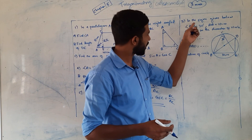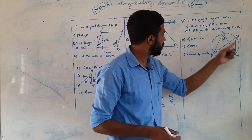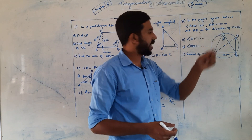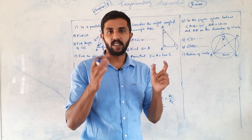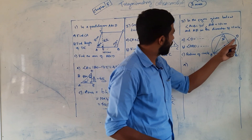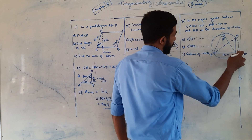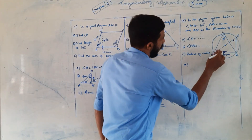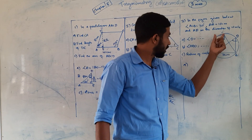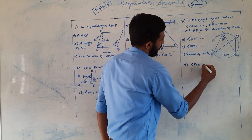Let's look at the next problem. This figure is given below — angle ACB is equal to 30 degrees. It's a circle. AD is the diameter of the circle. Let's find angle D. Angle D is equal to... because AD is the diameter, angle D is equal to 30 degrees.